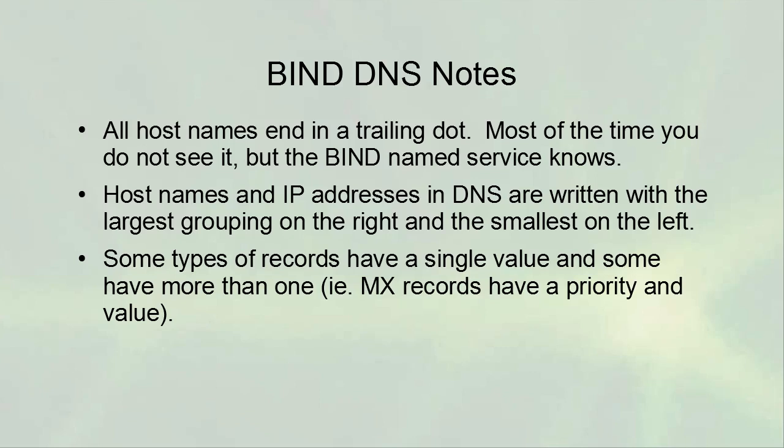Some types of records have a single value and some have more than one. MX records have a priority and a value — an MX record takes a domain name and gives you a priority along with a hostname of a mail server you can talk to. In addition, there are SOA records and other records that have multiple different pieces in them.